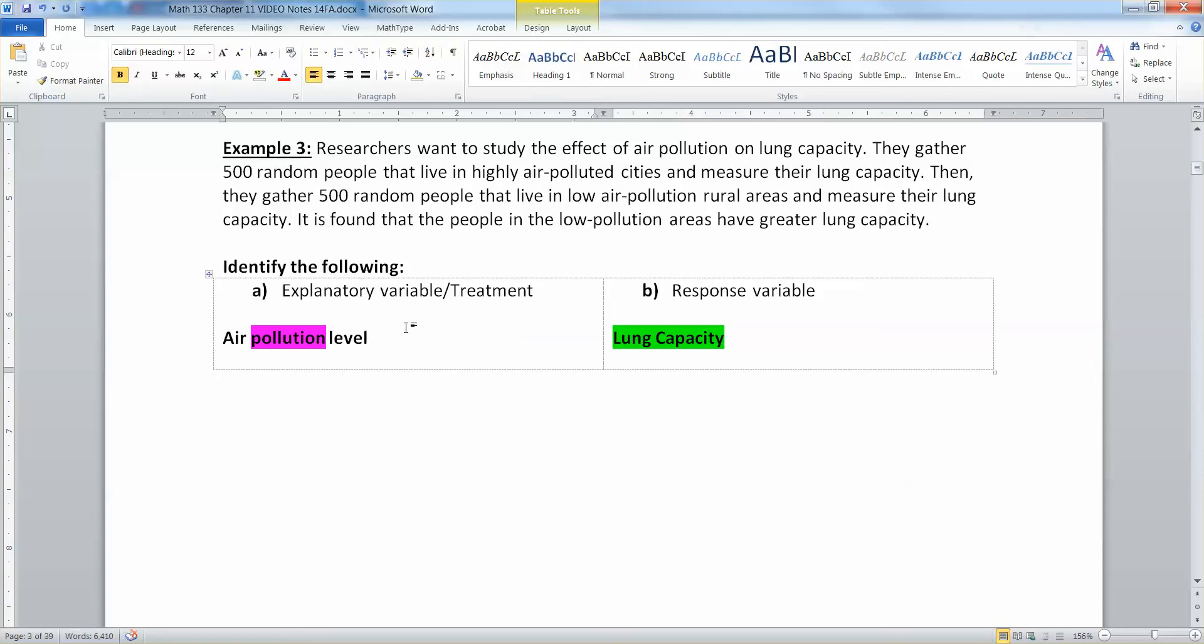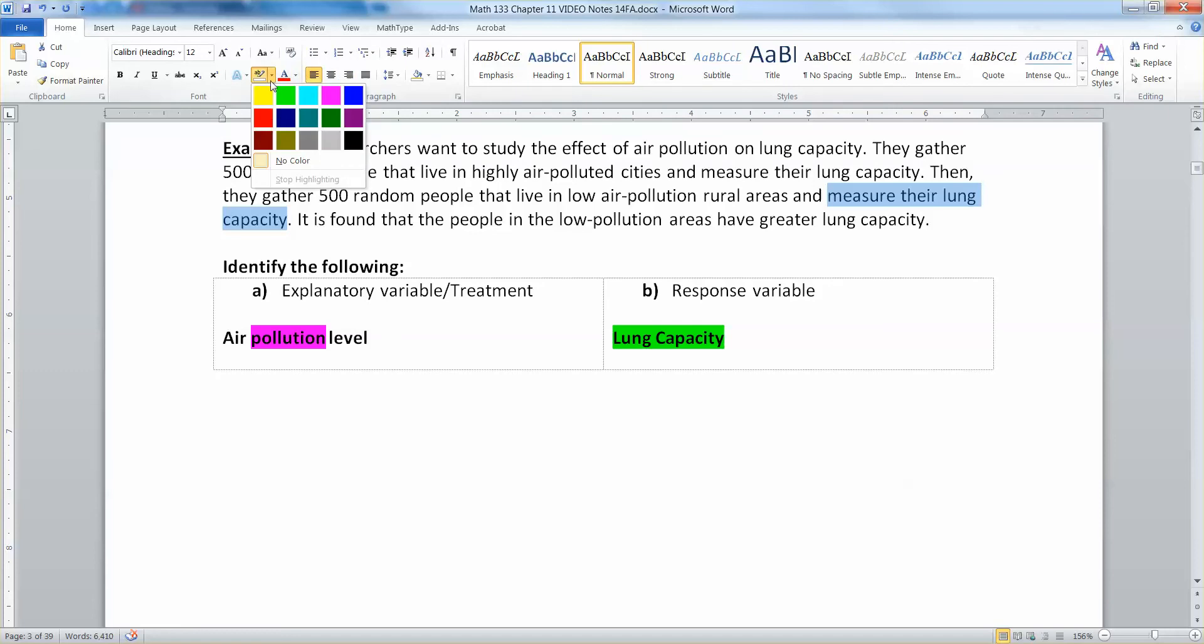That's your explanatory variable. And it varies. Variable means it has to vary. So you have the high pollution area and the low pollution area. And the response variable is the thing you're measuring about them, which is their lung capacity, which you can see right here. You're measuring that. They say measure the lung capacity. That means that is your response variable.